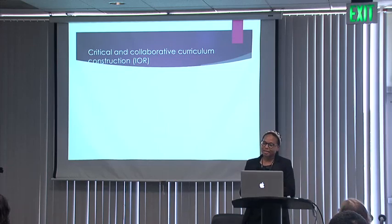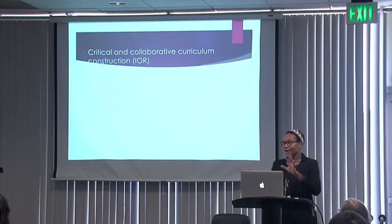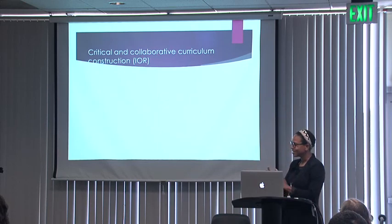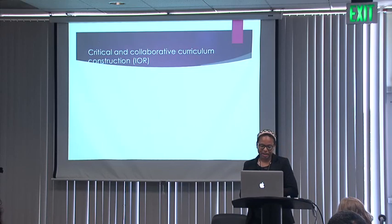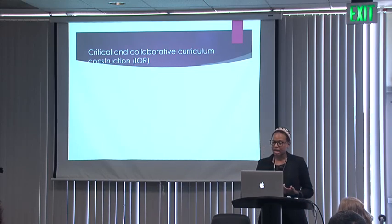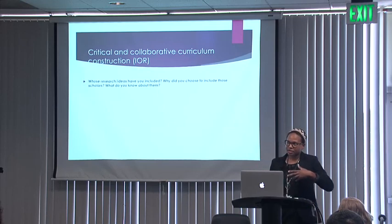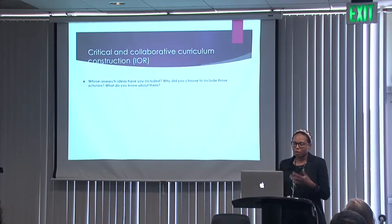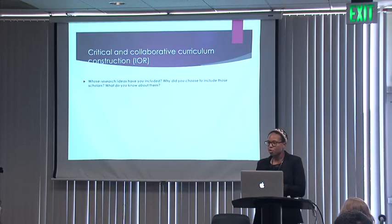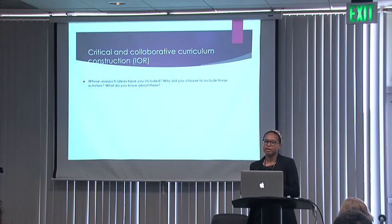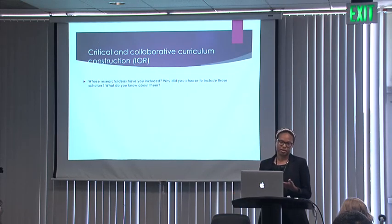The first strategy is critical and collaborative curriculum construction — I was not going for alliteration when I came up with this title, but it just worked out that way. This is more geared towards instructors of record, since you have a little bit more control over what's actually going into the class. What I mean is actually being reflexive and thinking about what you're putting into your curriculum — actually asking yourself: who am I including? Whose ideas are going in the syllabus? Why am I putting them in there as opposed to someone else? And what do I actually know about them besides this paper I'm citing them for?